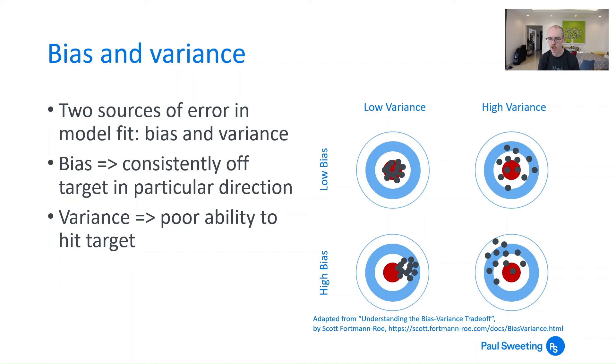So this has been demonstrated in terms of this kind of target approach here. So we've got low bias and low variance, everything's grouped together and pretty much on target. High bias and low variance, everything's grouped together, it's just in the wrong place. High variance and low bias means it's more like it's on target but it doesn't hit it very reliably. Whereas high bias high variance means it's all over the place and it's not even averaging to hit the target. So you've got all sorts of problems there.